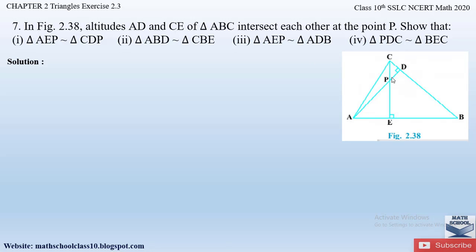According to the question, altitudes AD and CE in triangle ABC intersect each other at point P. An altitude is a straight line drawn which intersects another line at an angle of 90 degrees. Altitudes AD and CE intersect each other at point P in triangle ABC. We have to prove four parts of the question where we need to show the triangles to be similar.